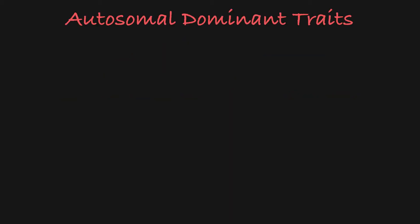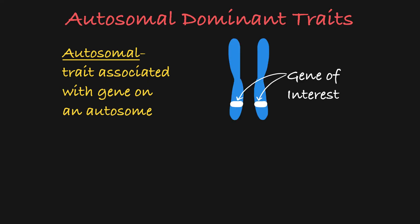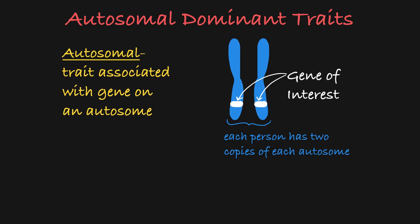In this case, autosomal refers to the fact that the trait you're looking at is associated with a gene on an autosome, like chromosome 1 or chromosome 2. This means that each person has two copies of this gene. The fact that the trait is dominant means that an affected person must carry at least one dominant allele associated with that trait.